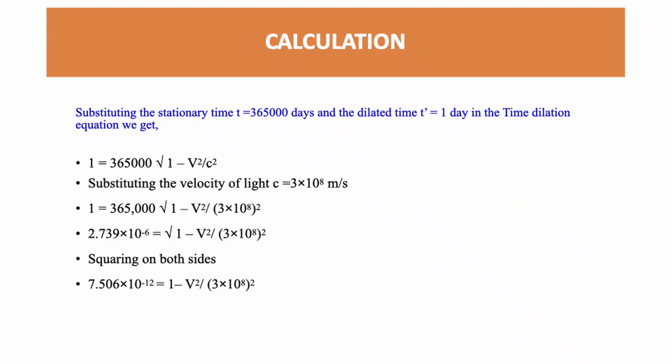Here, the stationary time, T, is taken as a thousand years, which is equal to 365,000 days. And the dilated time, T', is equal to one day. If we substitute the stationary time and the dilated time, T', in the time dilation equation, we get T' = T√(1 - V²/c²).